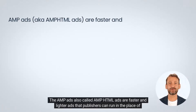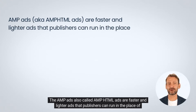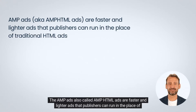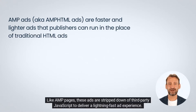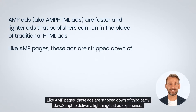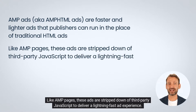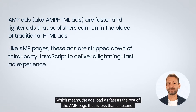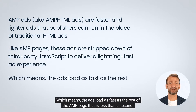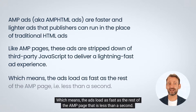AMP ads, also called AMP HTML ads, are faster and lighter ads that publishers can run in place of traditional HTML ads. Like AMP pages, these ads are stripped down of third-party JavaScript to deliver a lightning-fast ad experience, which means the ads load as fast as the rest of the AMP page — that is, less than a second.